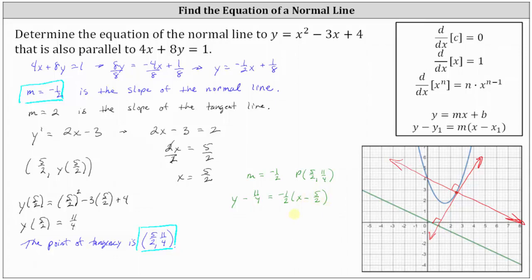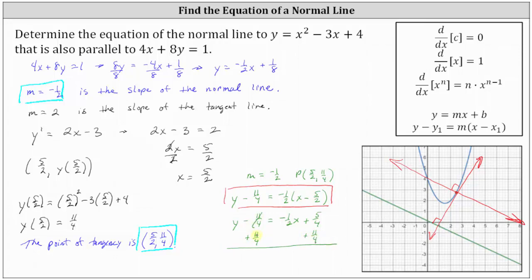We have y minus 11 fourths equals negative 1 half times the quantity x minus 5 halves. This is the equation of the normal line, but let's also write it in slope-intercept form by solving for y. Distributing negative 1 half gives us y minus 11 fourths equals negative 1 half x plus 5 fourths. Adding 11 fourths to both sides, we get y equals negative 1 half x plus 16 fourths, which simplifies to y equals negative 1 half x plus 4.